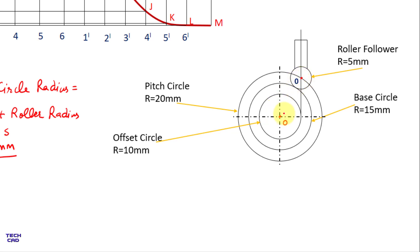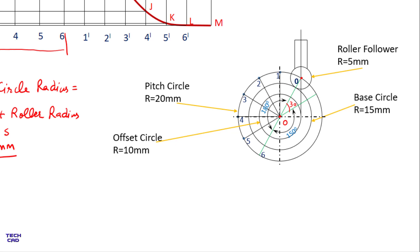From point 0, make a line passing through center O — this represents the 180 degree outstroke. Make another line at 150 degrees representing the return stroke, and the remaining 30 degrees represents the dwell. Now divide the 180-degree outstroke into 6 equal parts, naming each point from 1 to 6. Similarly, divide the 150-degree return stroke into 6 equal parts, naming them from 1-dash to 6-dash.